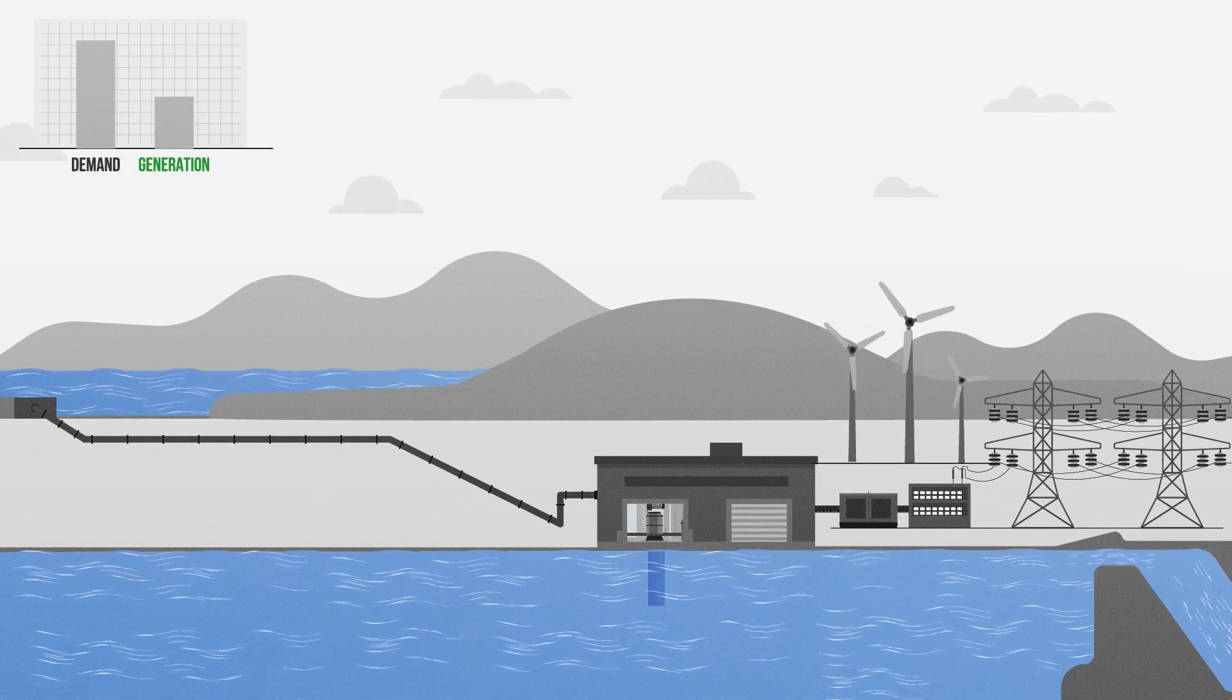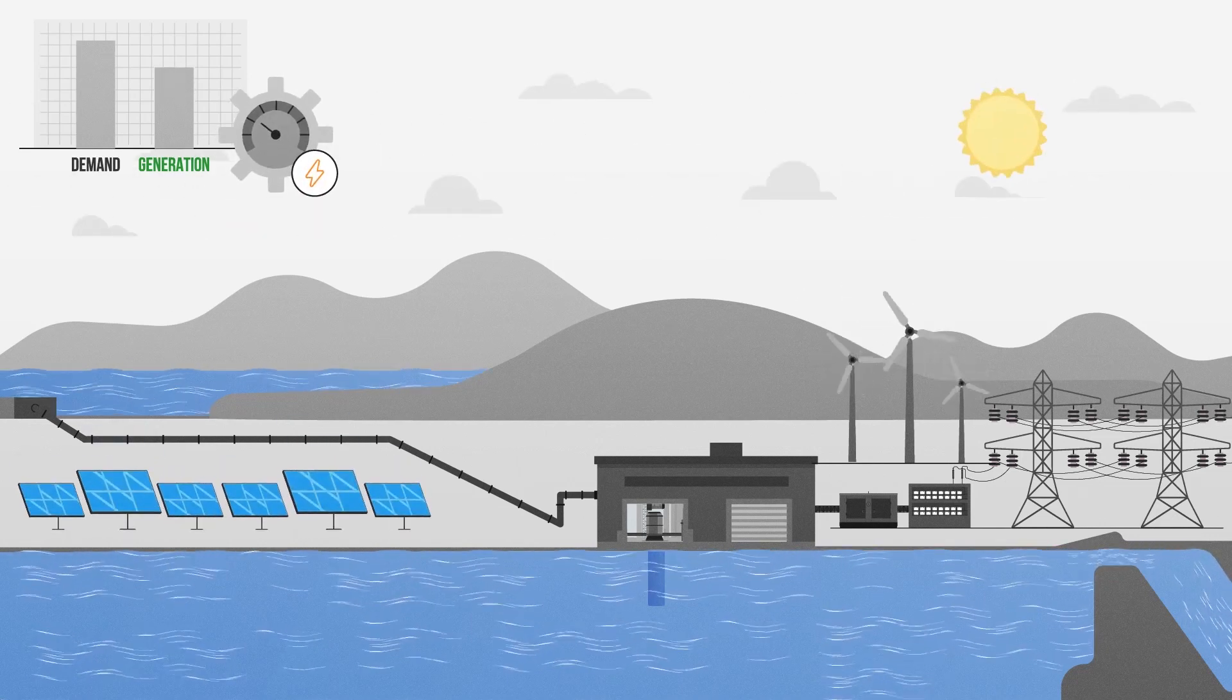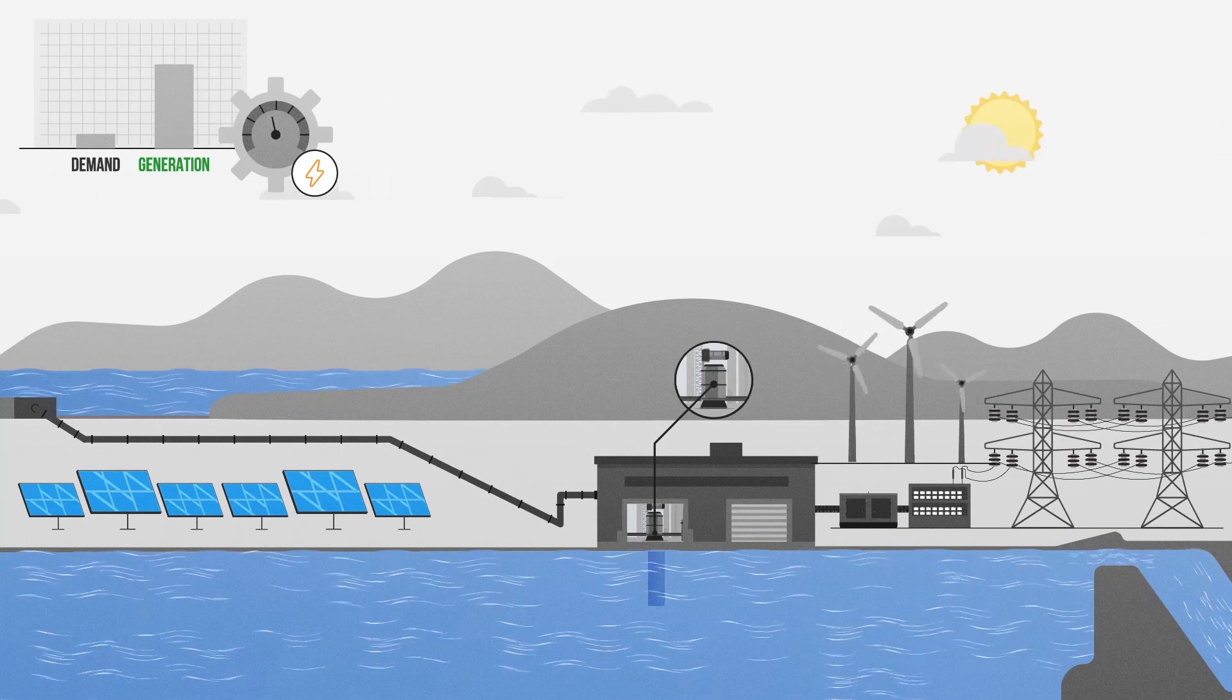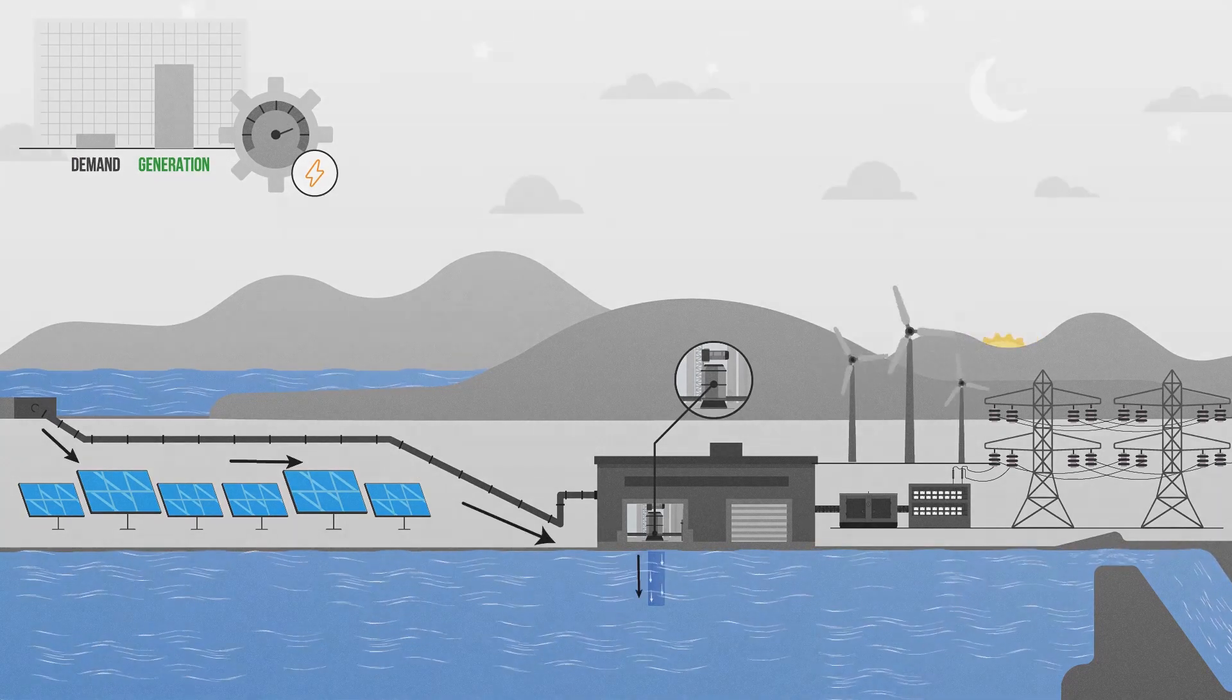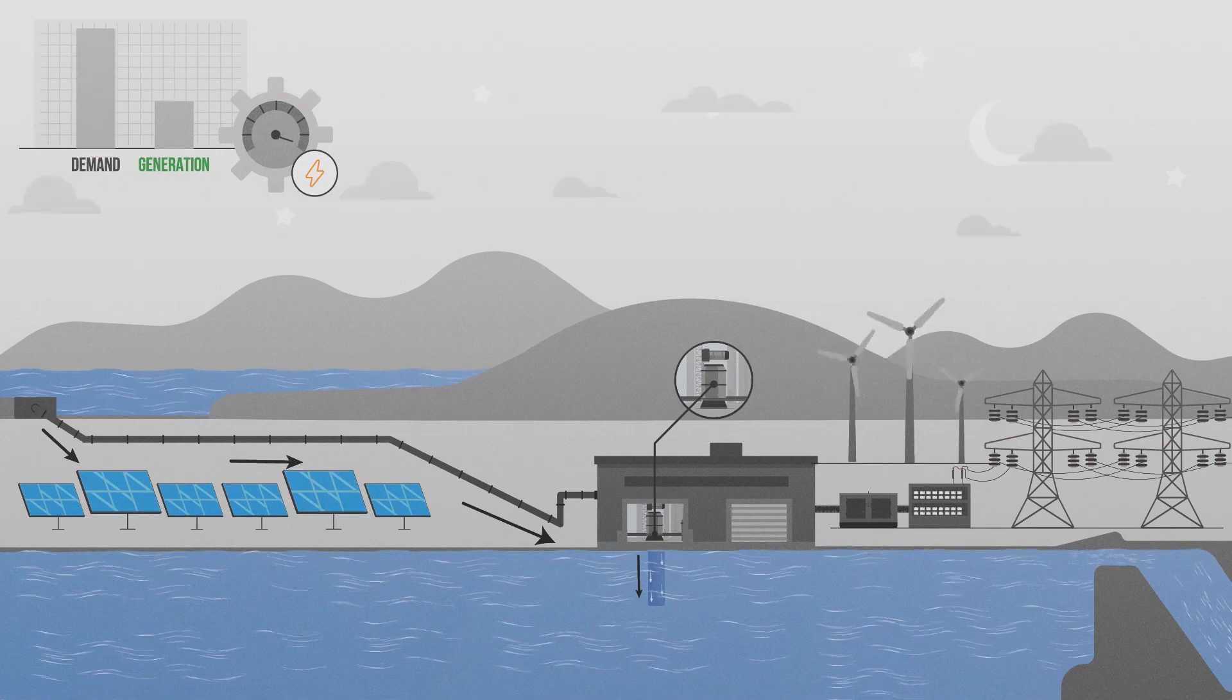This works well when paired with more intermittent renewable energy sources like wind and solar. If the sun is shining but no one is using electricity, pumped storage can be used to move water up into the reservoir and then released again in the evening when the demand for power increases.